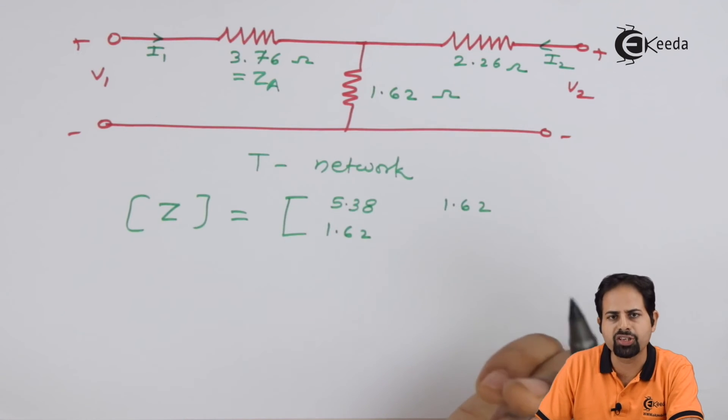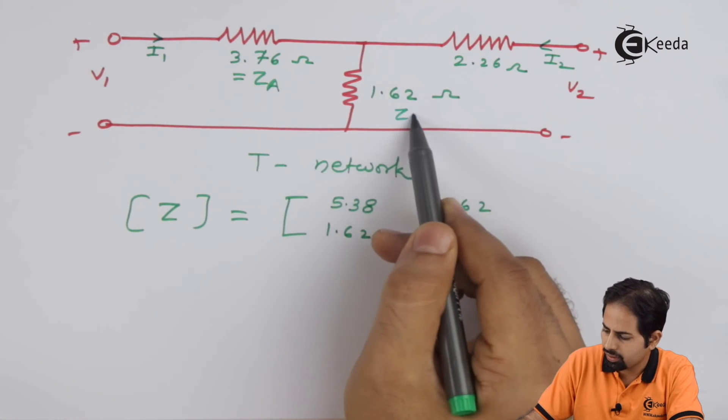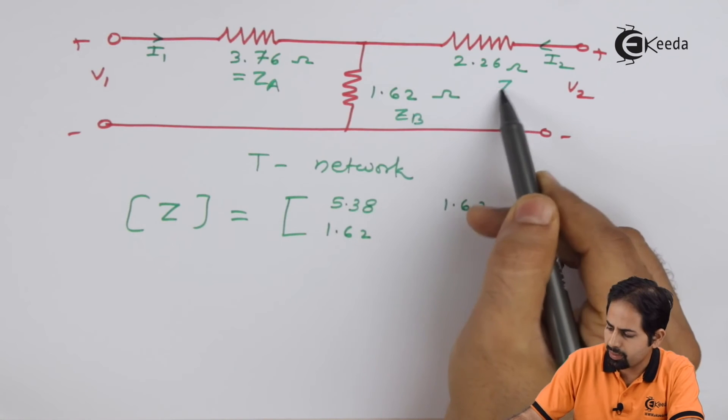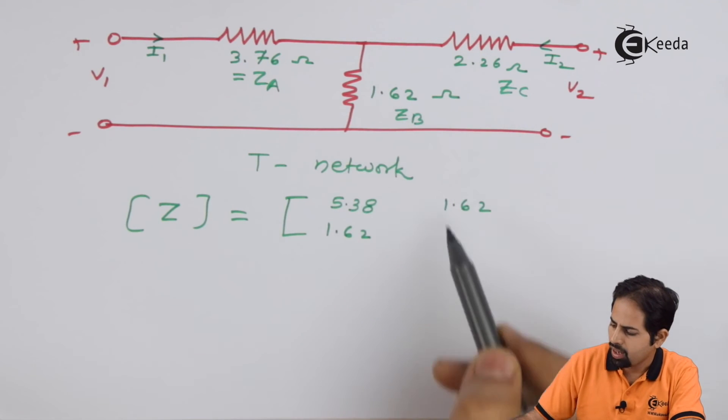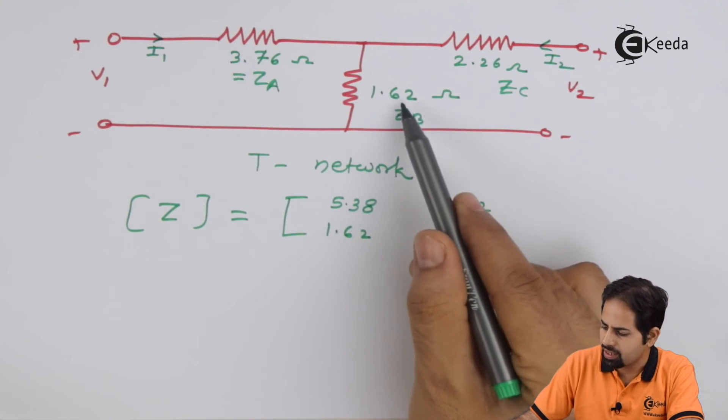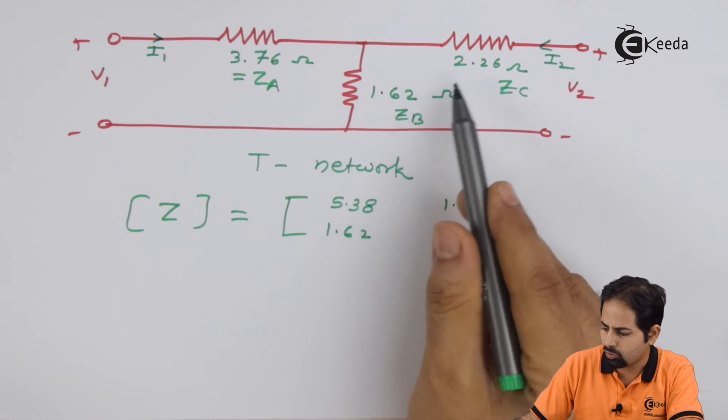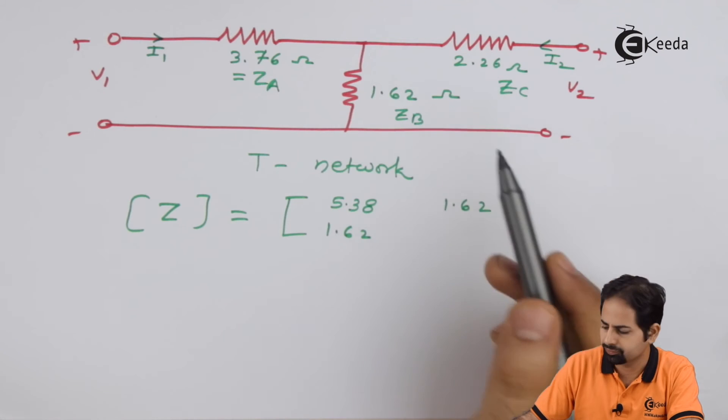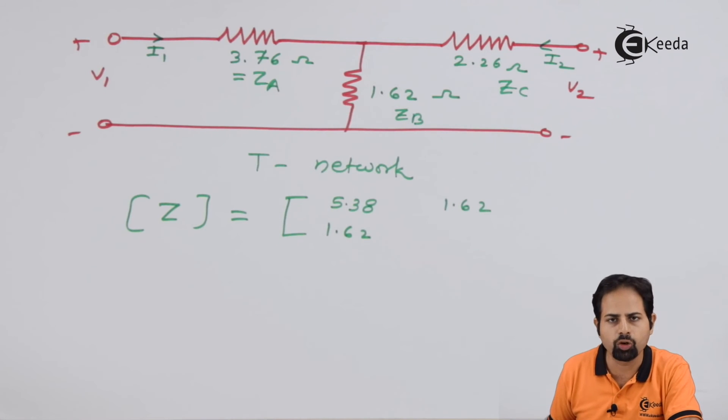This is ZA, this is ZB and this is ZC. So Z22 is ZB plus ZC, that is 1.62 plus 2.26, which comes out to be 3.88.